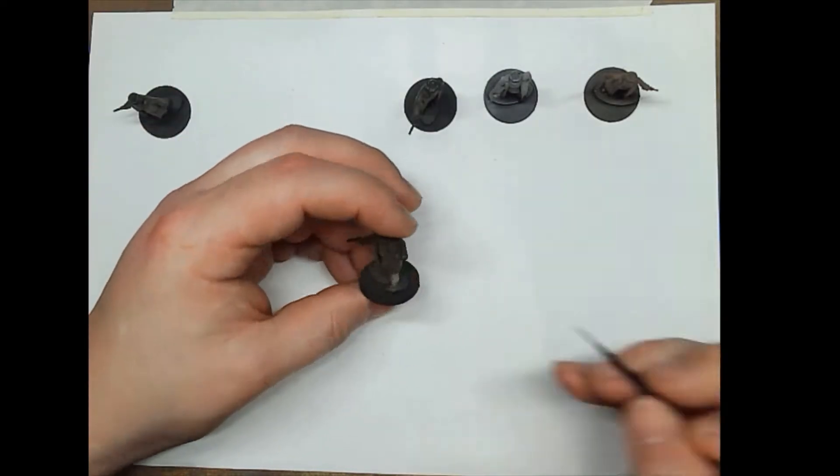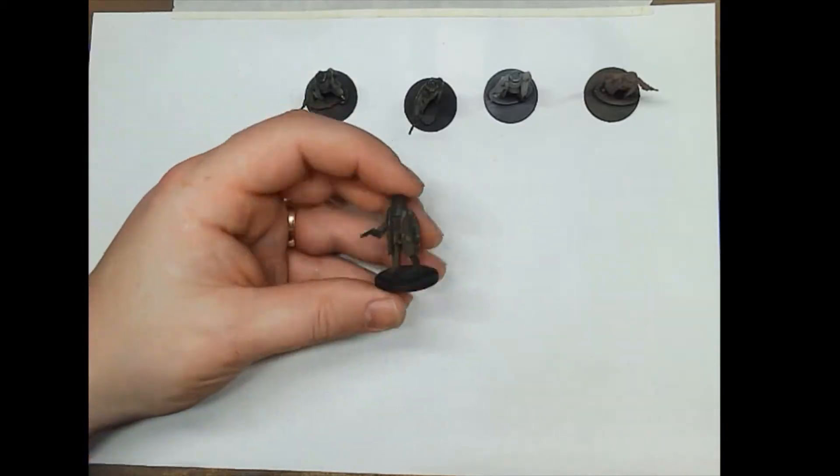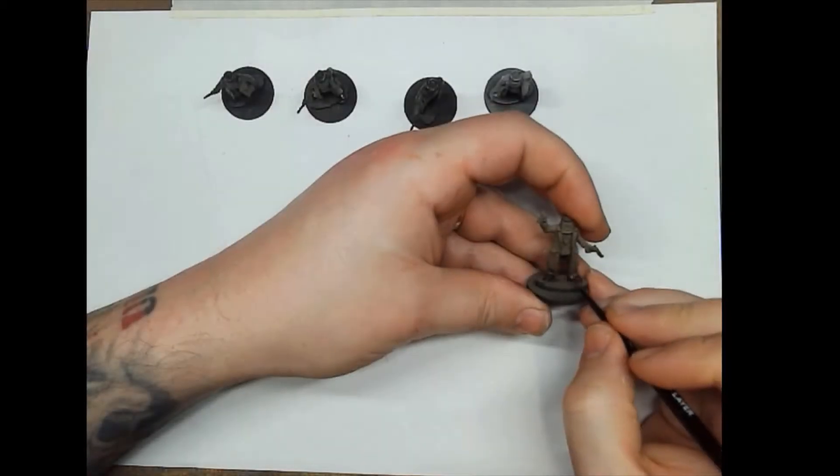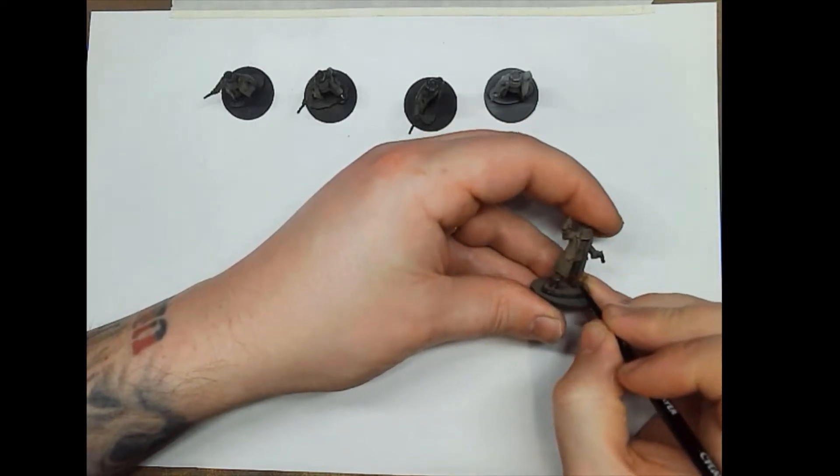I'm going to try and avoid doing any part of the model twice with the same colour. So if I use, for example, Gorthor Brown on the trousers, I won't use the Gorthor Brown again on any other part of the model.